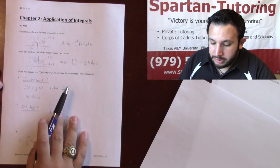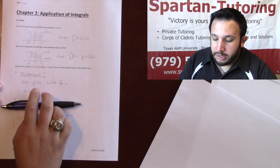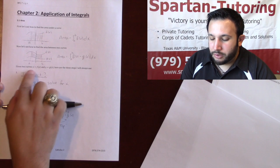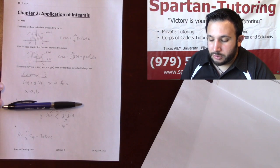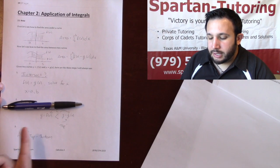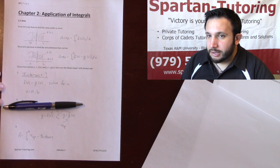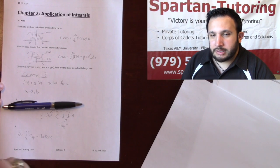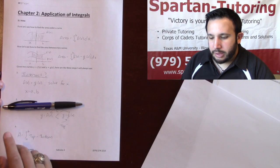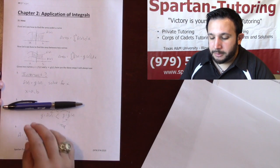Step one: find where do these two functions intersect. I'm looking for the area between two curves — how do I know where they intersect? Set them equal to each other and solve for x. More times than not you're going to get two x values, because a lot of times it'll be quadratic or something like that, and you'll get x equals a and x equals b.